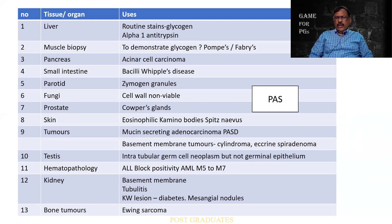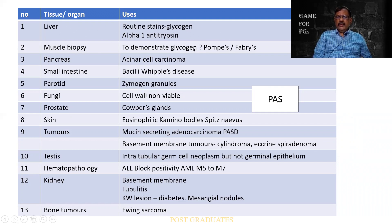He has given it from the tissue point of view or sometimes from the lesion point of view — not the basic chemical structure. For example, in the liver it can stain the glycogen; the alpha antitrypsin can be stained. In the muscle, there can be staining of glycogen — this itself can be useful to diagnose Pompe's disease or Fabry's disease, wherein you will find glycogen deposition in the muscle. Pancreas, in the case of acinar cell carcinoma. Small intestine — Whipple's disease, foamy macrophages positive for PAS.